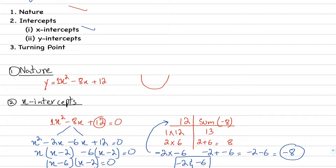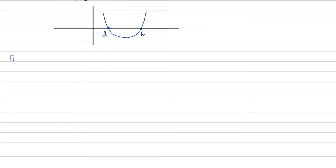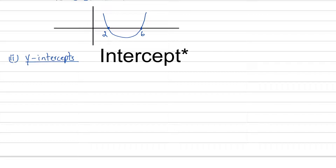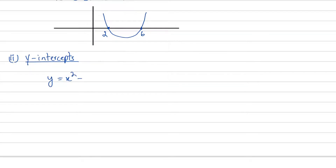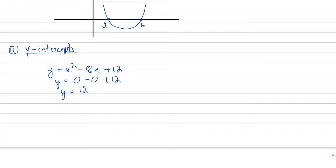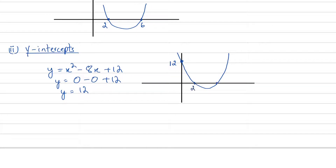Now let's talk about the y-intercept — perhaps the easiest of them all. To find the y-intercept, we set x equal to zero. So y equals 0 squared minus 8 times 0 plus 12, which gives y equals 12. So our y-intercept is 12, meaning the curve crosses the y-axis at the point (0, 12).